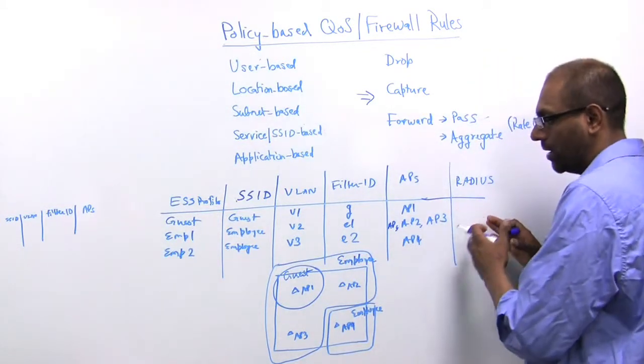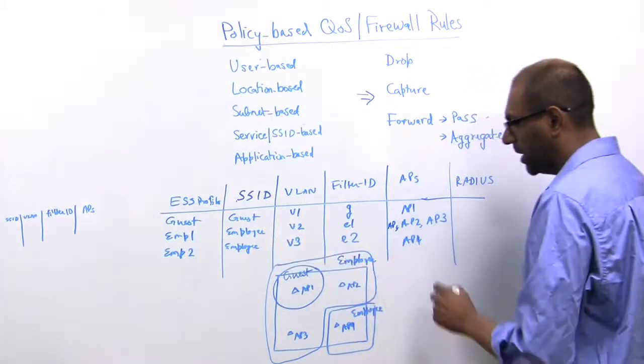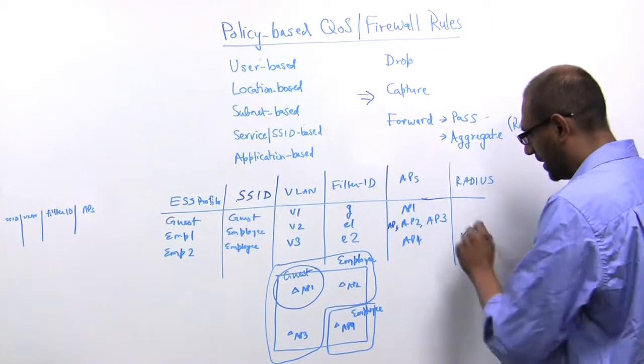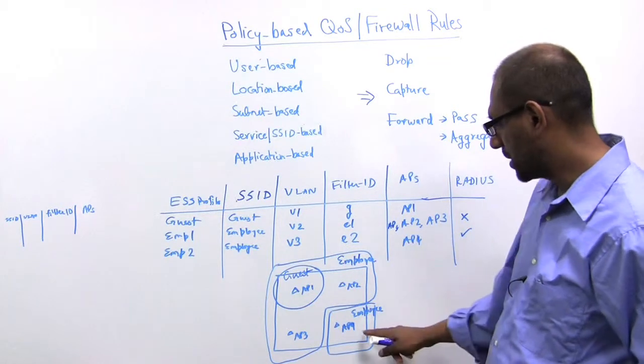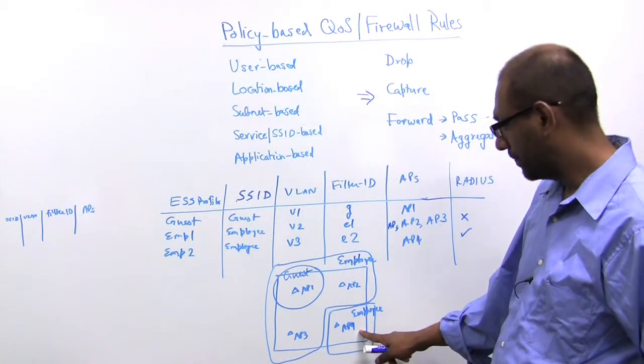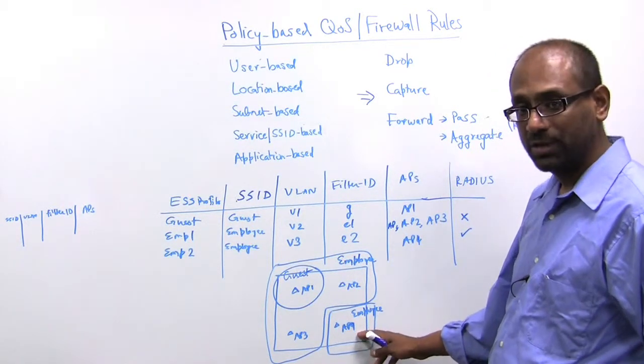So depending upon the particular service, you could say RADIUS defined yes and no here. Then what happens is the following. As a particular user comes into this location, the user associates with the network.